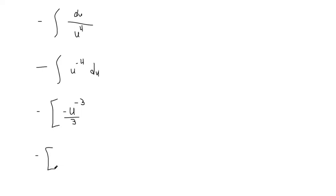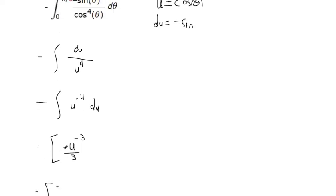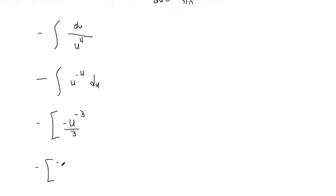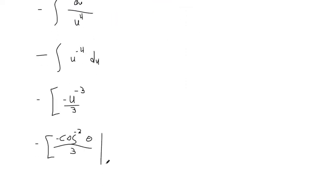Okay, but now I'll put things back in terms of x. That way I can get those limits of integration back in there. So that's negative cosine to the third theta. Sorry, that's to the negative third, isn't it? Over three. Then those limits of integration are from zero to pi over six.